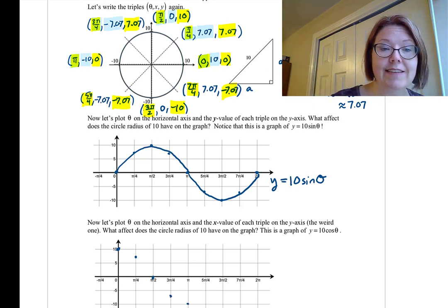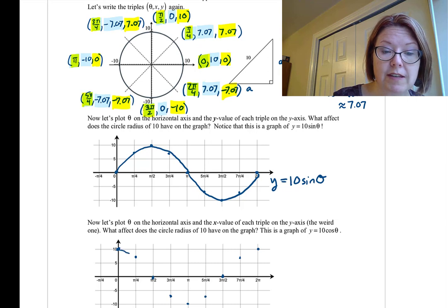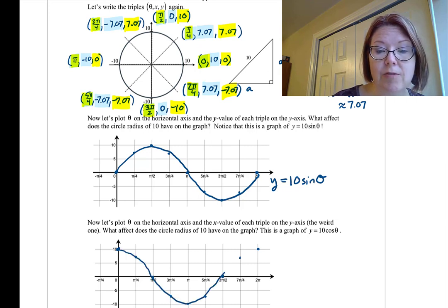Then π, negative 10. Then 5π over 4, negative 7.07. 3π over 2, 0. 7π over 4, 7.07. And 2π would bring us back to a value of 10. So again, that same curve, it looks just like that cosine curve, only it now fluctuates between 10 and negative 10.